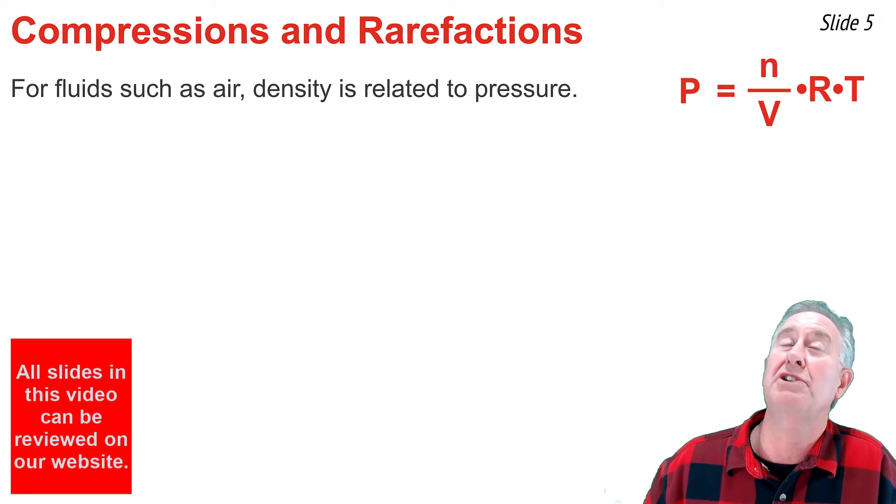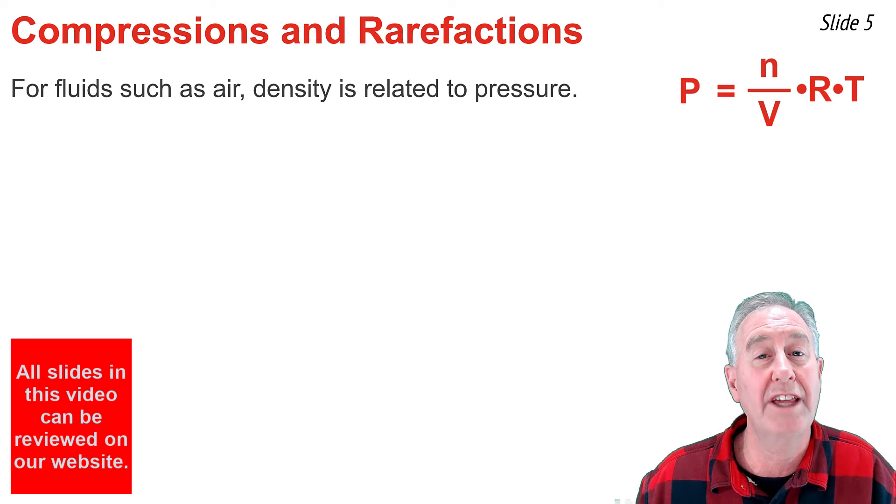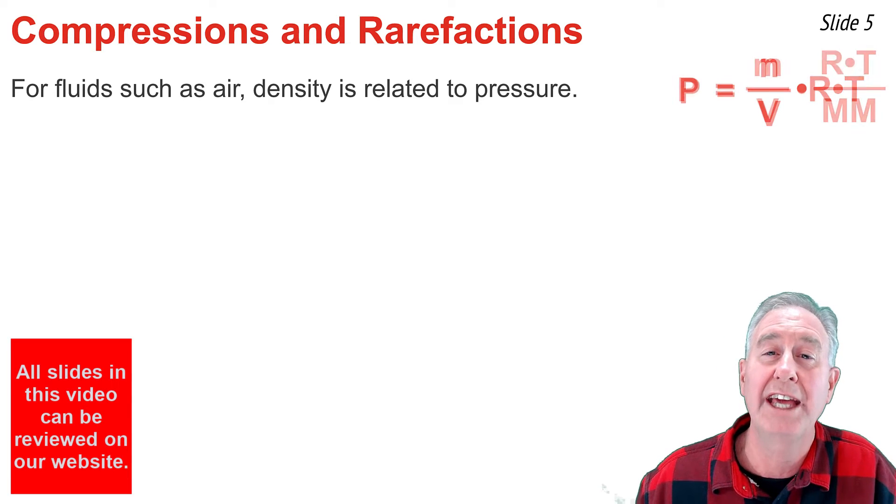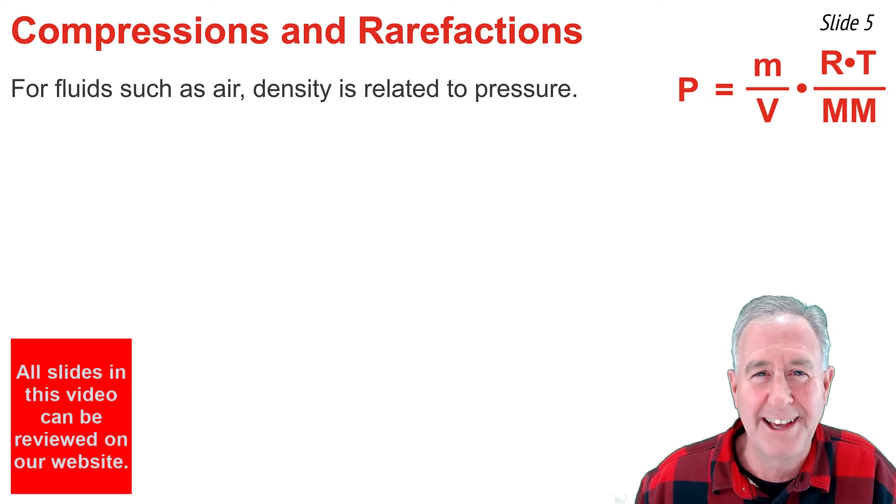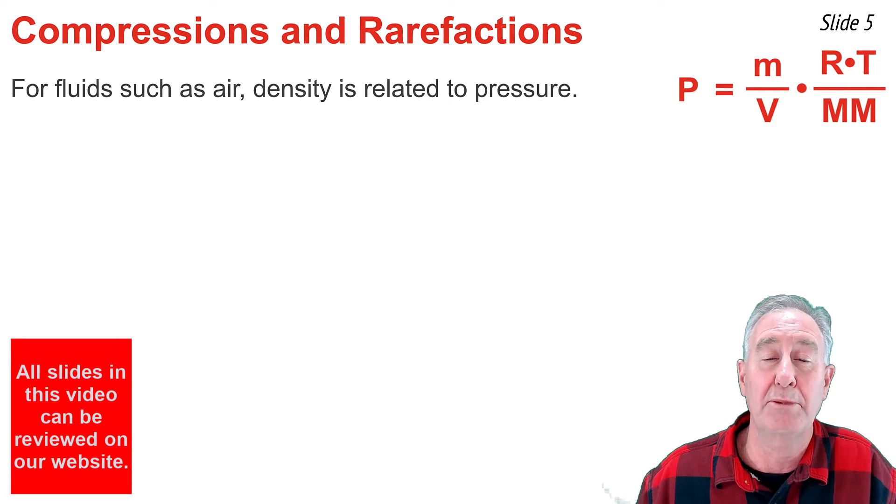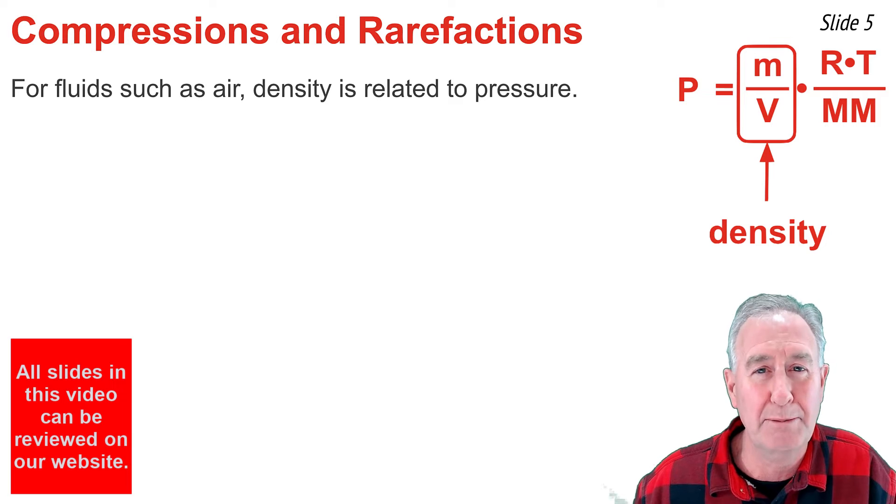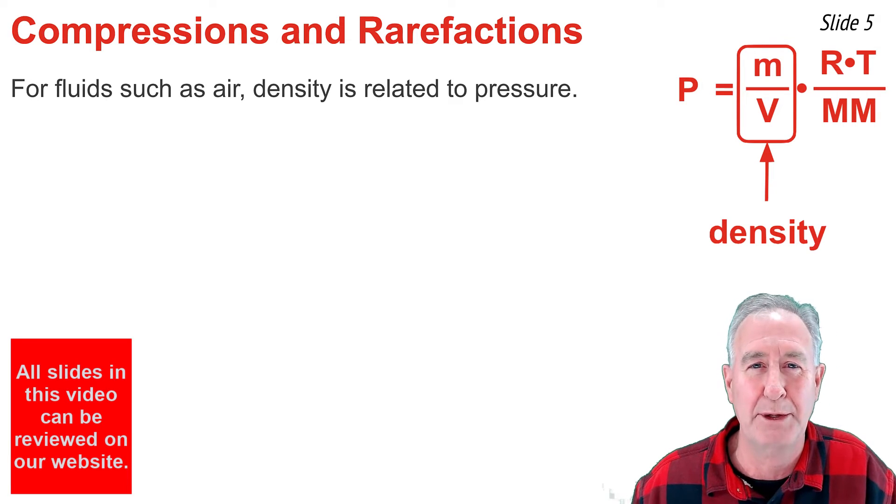So into this equation, I can substitute the ratio of M divided by molar mass and then do some rearranging so that the equation looks something like this. The mass divided by the volume is what we know as the mass density, or simply the density of the gas sample.